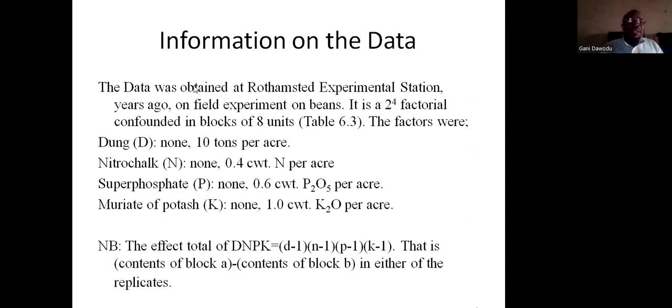Information on the data. The data was obtained at Rothamsted Experimental Station years ago on a field experiment on beans. It is a 2 to the power 4 factorial confounded in blocks of 8 units. The factors were, since they are in two levels, 2 to power 4 in the 2N series.